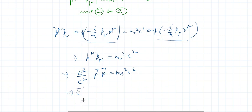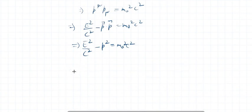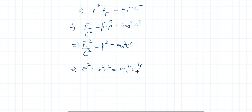This gives E² over c² minus p² equals m₀² c². Multiplying both sides by c², we get E² minus p²c² equals m₀² c⁴, which implies that E² equals m₀² c⁴ plus p²c². So we can write E² equals m₀²c⁴ plus p²c².